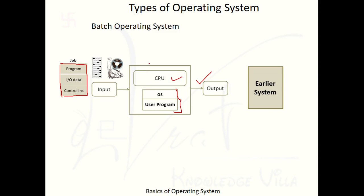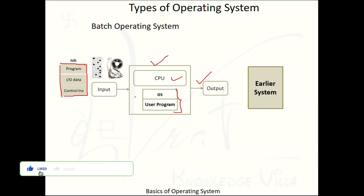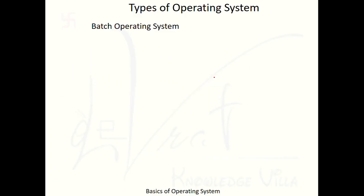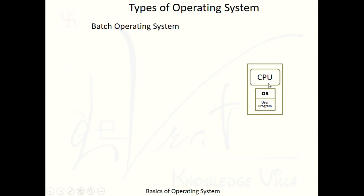We are not making any change to the internal system, but we are going to modify the way of giving input and output. We are not going to modify the processor or memory — we are just going to modify the methods of giving input. Let's see the properties of Batch Operating System.